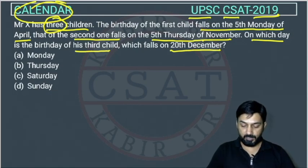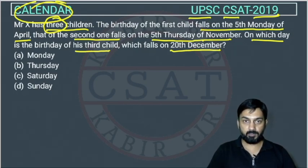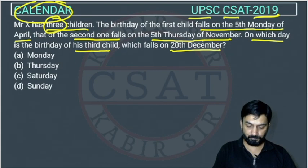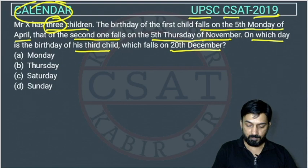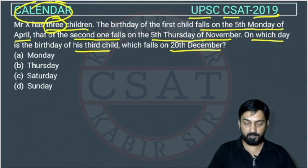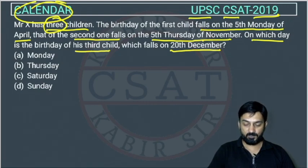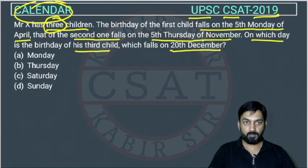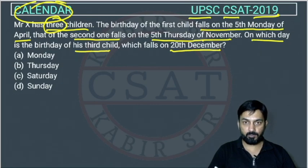We have to find which day falls on 20th December. Many students get confused — they feel the first child is born in April and the second child is born in the next year's November. But this question is not saying they are born in the same year. They are celebrating birthdays of his three children in a particular year, so the birthday celebrations can happen in the same year.